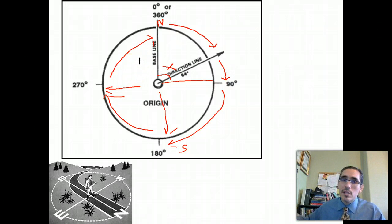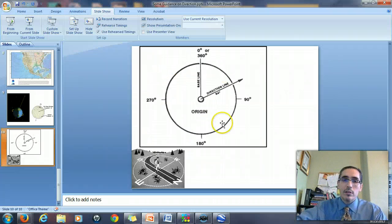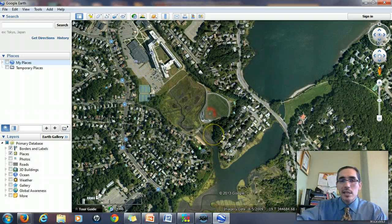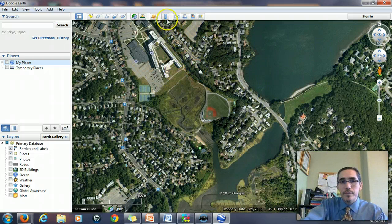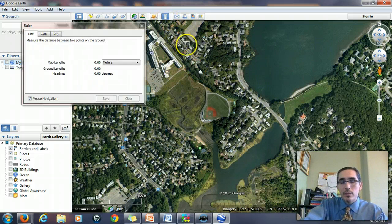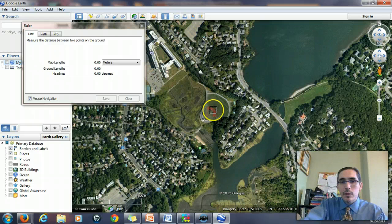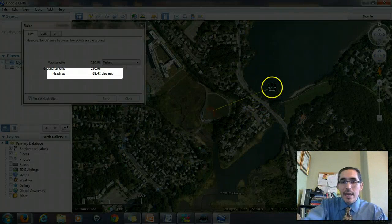This way of describing direction is available to you in Google Earth, for example. If we look at Google Earth, we access that ability to get our azimuth through the measurement tool. When we call up the measurement tool and go to measure something, you'll see that there is a number called heading. And that heading indicates the azimuth.